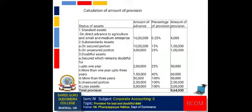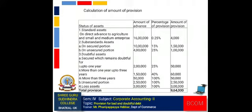Third, doubtful assets — (A) secured which remains doubtful for: (i) up to 1 year: amount of advance Rs. 2 lakh, percentage of provision 25%, amount of provision Rs. 50,000; (ii) more than 1 year up to 3 years: amount of advance Rs. 1 lakh 50,000, percentage of provision 40%, amount of provision Rs. 60,000; (iii) more than 3 years: amount of advance Rs. 50,000, percentage of provision 100%, amount of provision Rs. 50,000.